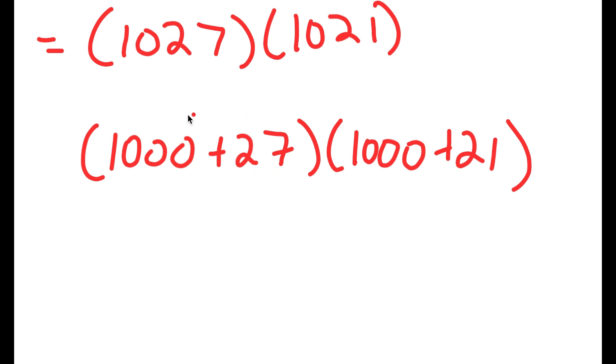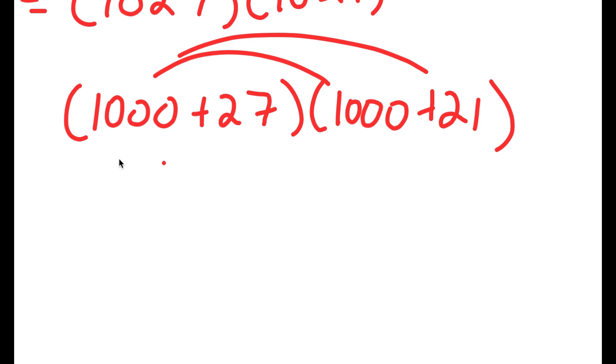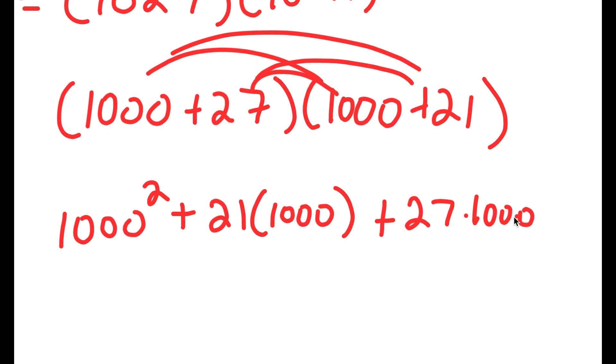And now this way, I can distribute. So 1000 times 1000 is 1000 squared plus 21 times 1000 plus, now I'm going to distribute the 27. So I get 27 times 1000 plus 27 times 21.